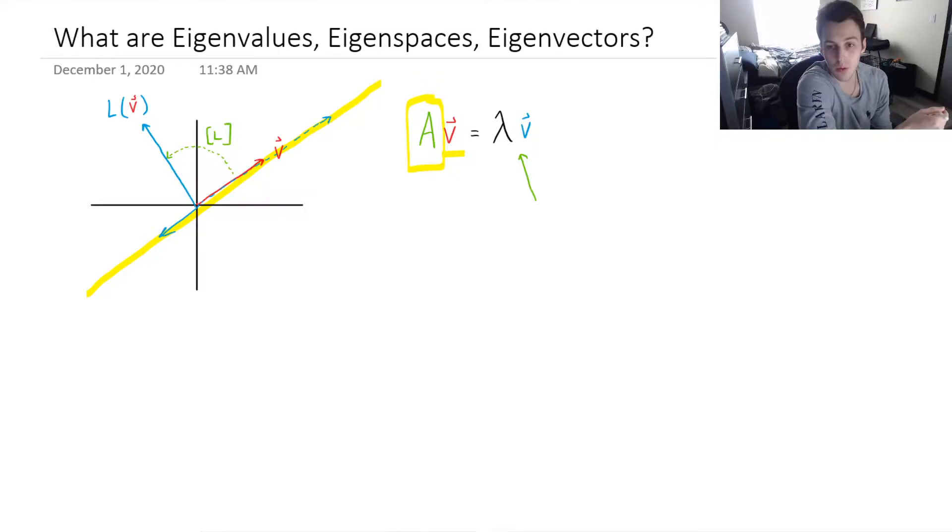But there could be multiple vectors that work. And so each vector has a corresponding vector space of solutions. And that's called our eigenspace.